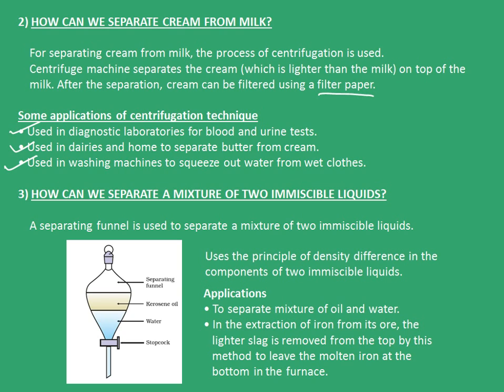The third one is: how can we separate a mixture of two immiscible liquids? A separating funnel is used in this case to separate a mixture of two immiscible liquids. It uses the principle of density difference in the components of two immiscible liquids. We take a funnel which has a stopcock, and when we put the mixture in, the two components separate because there is a difference in density of both.